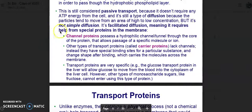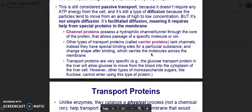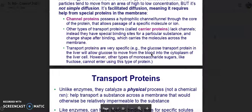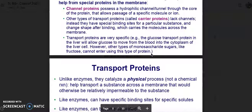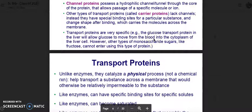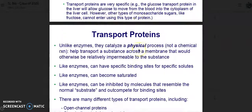It's not simple diffusion, it's facilitated diffusion, meaning it requires help from special proteins in the membrane. Channel proteins possess a hydrophilic channel through the core of the protein that allows passage of a specific molecule or ion. Other types of transport proteins called carrier proteins lack channels. Instead, they have special binding sites for particular substances and change shape after binding, which carries the molecules across the membrane. Transport proteins are very specific. For example, the glucose transport protein in the liver will allow glucose to move from the blood into the cytoplasm of the liver cell. However, other types of monosaccharide sugars like fructose cannot enter using this type of protein.